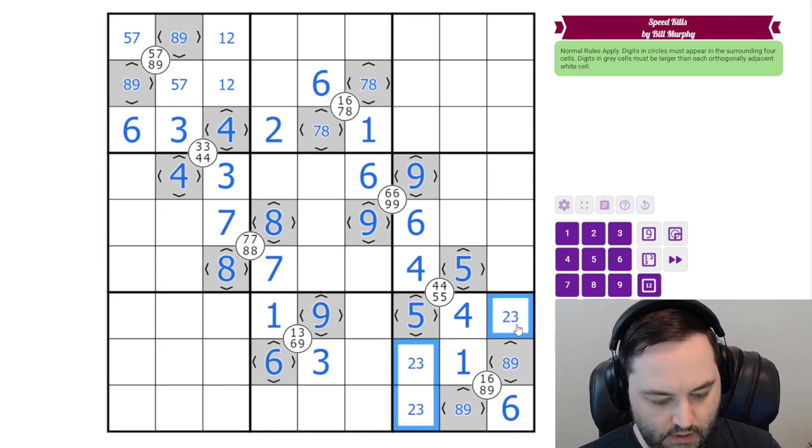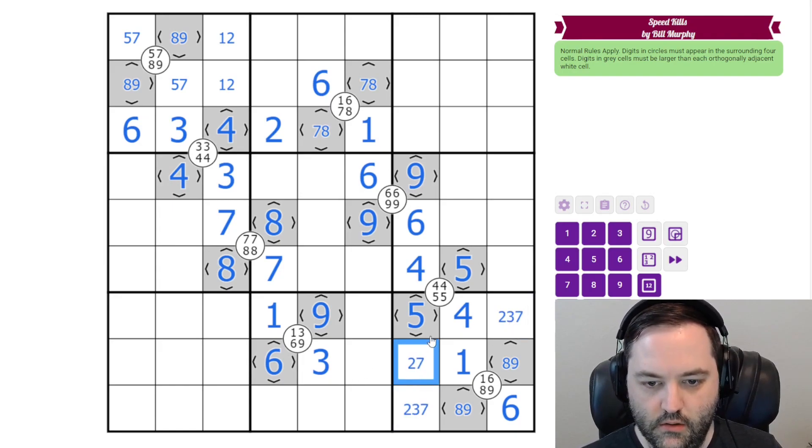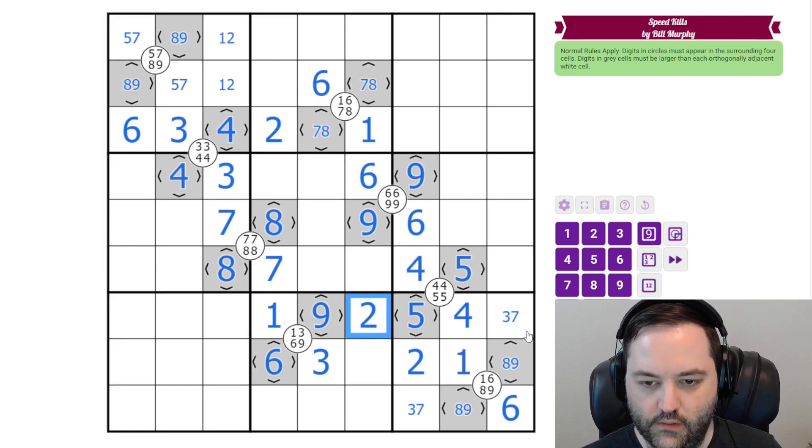These are 2, 3, and 7. This is not 3. But this also has to be less than 5, so this is our 2. This also has to be less than 5. It's not 1 or 4, and it's not 3 in the box, so that's a 2.